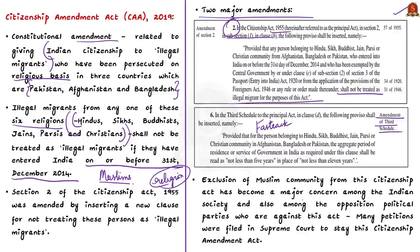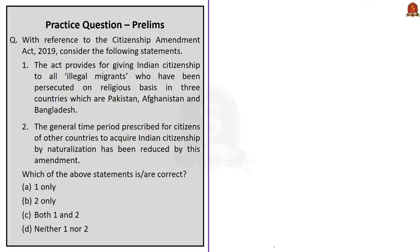The exclusion of the Muslim community from the Citizenship Act has become a major concern among Indian society and opposition political parties who are against this act. Many petitions were filed in the Supreme Court to stay the Citizenship Amendment Act. With this, we have come to the end of this news analysis.